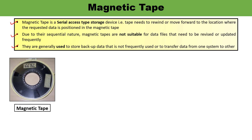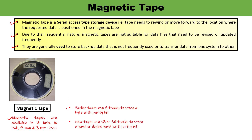Magnetic tape is made from Mylar plastic material and is coated with magnetic material — iron oxide — on one side only. These magnetic tapes are available in a variety of sizes: half inch, one-quarter inch, 8mm, and 3mm. In early days, nine tracks were used to store a byte along with one parity bit. Latest tapes use 18 or 36 tracks: 18 tracks can store one word with a parity bit, and 36 tracks can store two double words with parity bits.